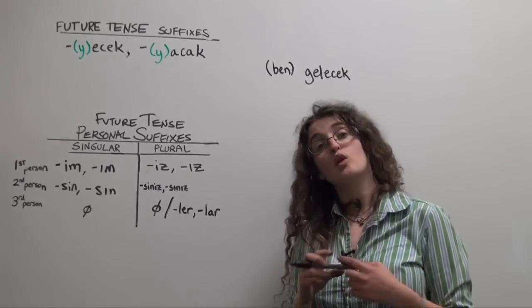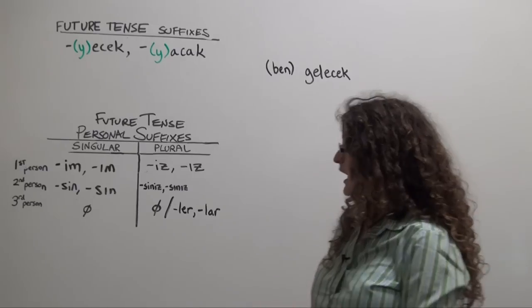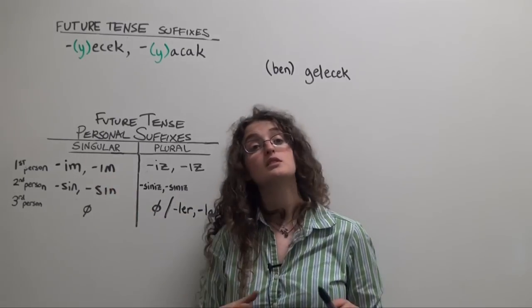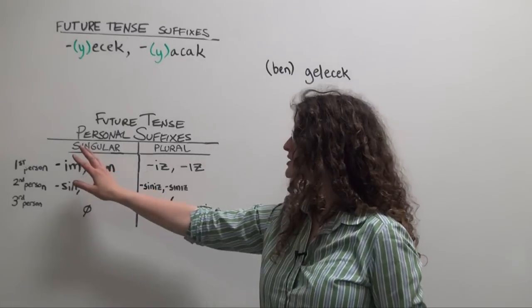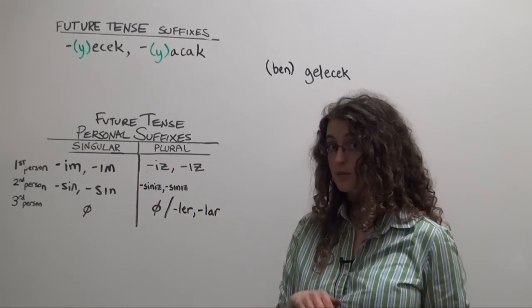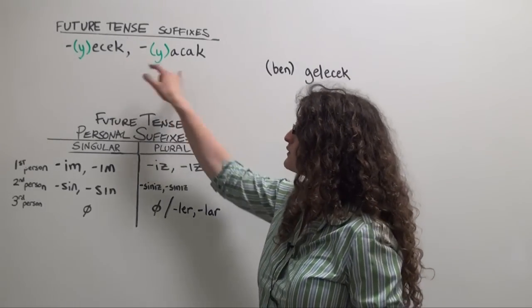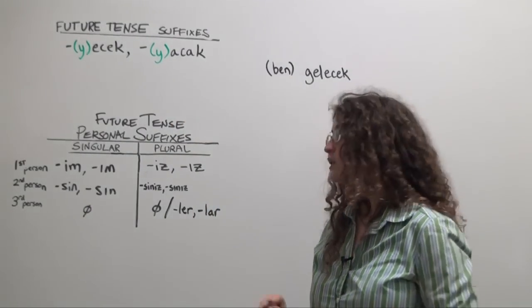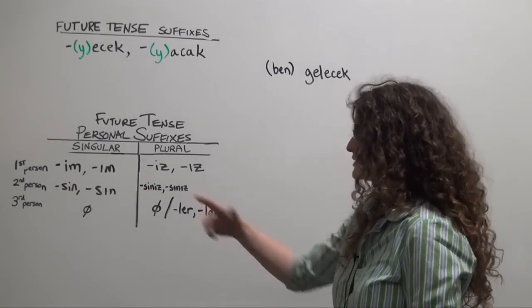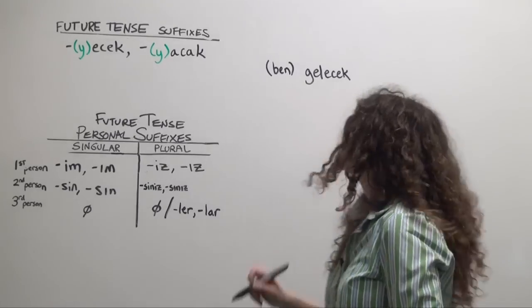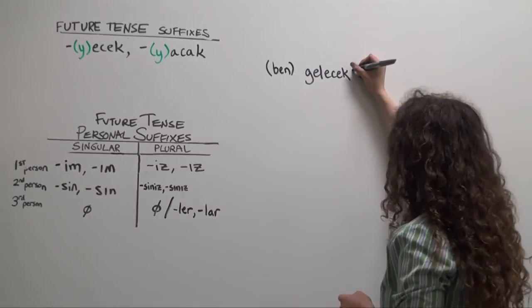We're not done though, because we need to add the appropriate personal suffix. We'll add our personal suffix according to the rules of four-way vowel harmony. But because our personal suffix will be harmonizing with the syllable directly preceding it, in other words, with whatever form of the future tense suffix we've chosen, we're effectively going to choose either im or um, or sin, sun, and so on. So ben gelecek im.